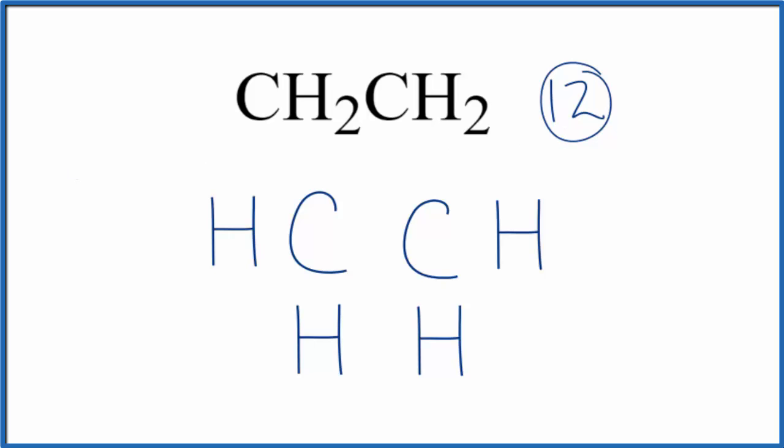So we have 12 total valence electrons. We put electrons between atoms, and that forms the chemical bond. So we have 12 electrons. Let's put them between atoms. We've used 10 electrons, 10 of our valence electrons.